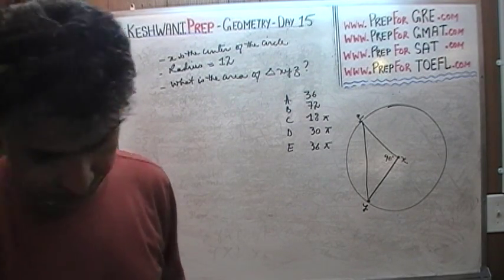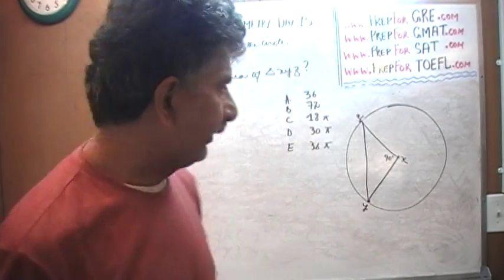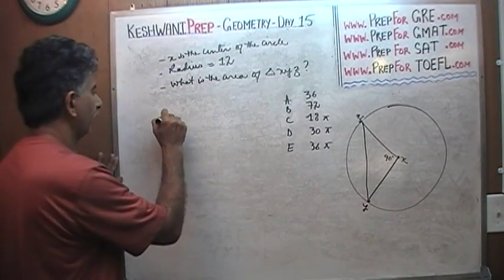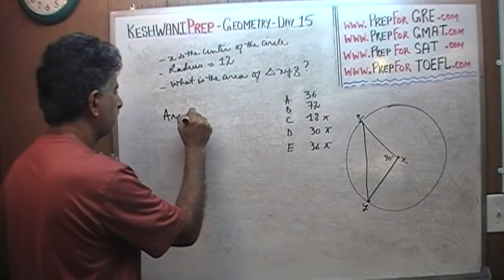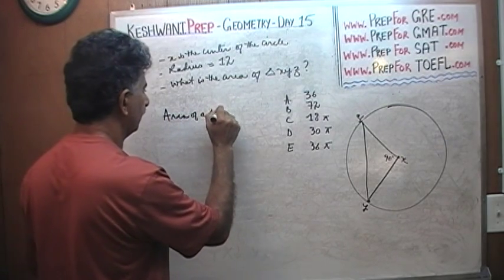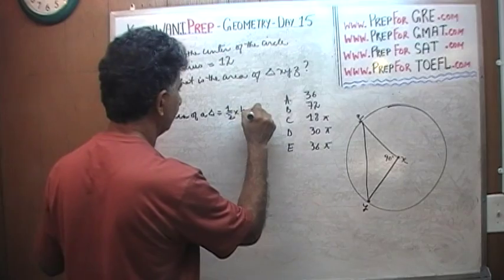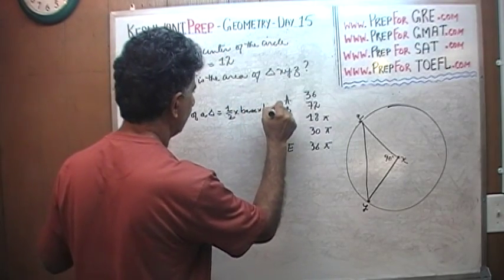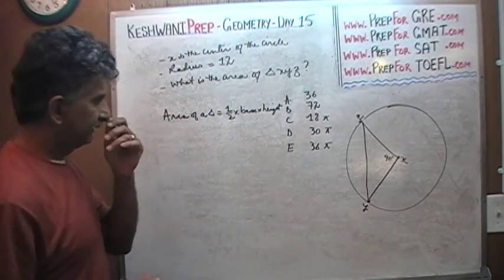Well, here's what's going on. How do we find area of a triangle? Area of a triangle equals one-half base times height. One-half base times height.